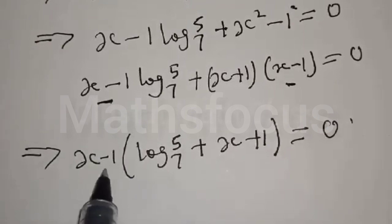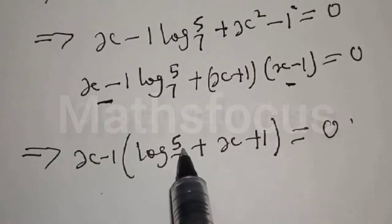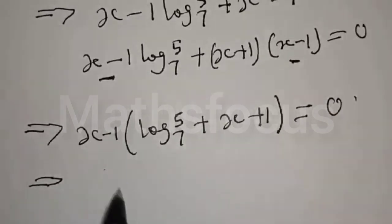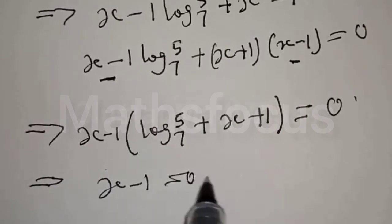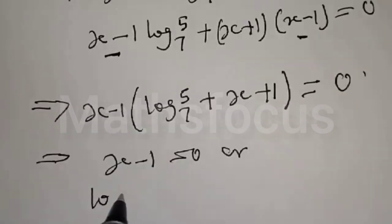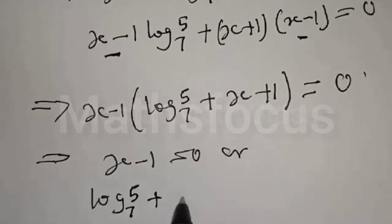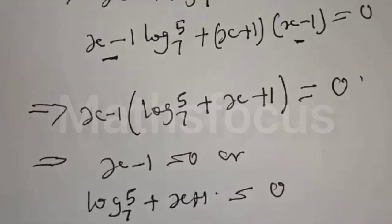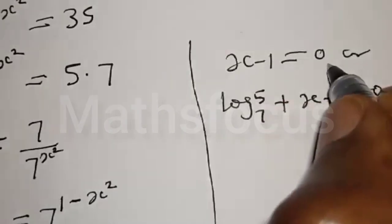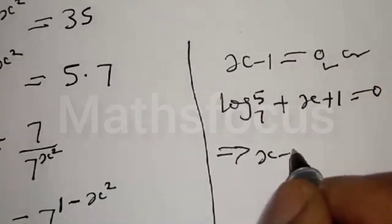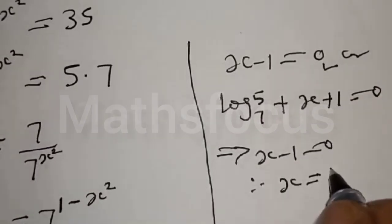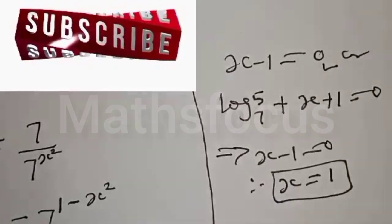From here, x minus 1 equals 0, or log base 7 of 5 plus x plus 1 equals 0. From x minus 1 equals 0, therefore x is equal to 1. That is one of the values of x.